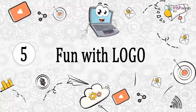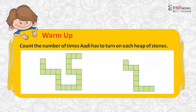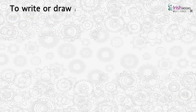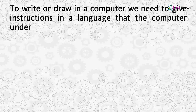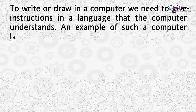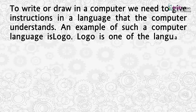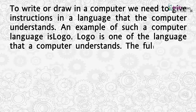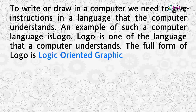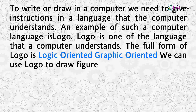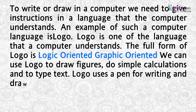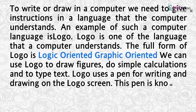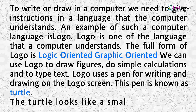Chapter 5: Fun with Logo. To write or draw in a computer, we need to give instructions in a language that the computer understands. An example of such a computer language is Logo. Logo is one of the languages that a computer understands. The full form of Logo is Logic Oriented Graphic Oriented. We can use Logo to draw figures, do simple calculations, and type text. Logo uses a pen for writing and drawing on the Logo screen, and this pen is known as the turtle.